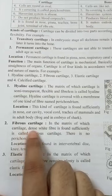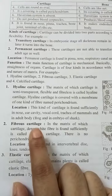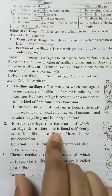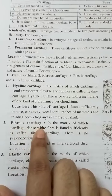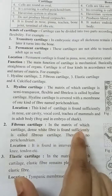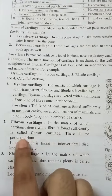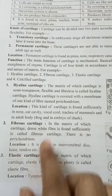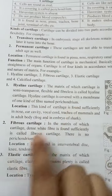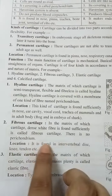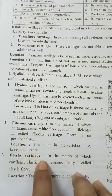Second: fibrous cartilage, also called fibrocartilage. This is very important because fibrous cartilage is so strong it is comparable to bone. In its matrix, dense white fiber is found sufficiently. There is no perichondrium — unlike hyaline cartilage which has perichondrium. Fibrous cartilage is found in the intervertebral disc, knee, and tendon.